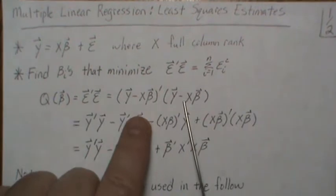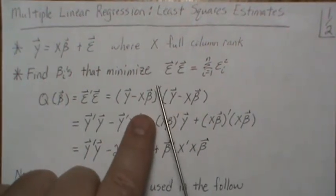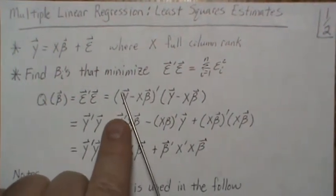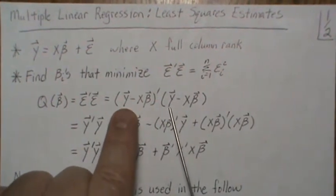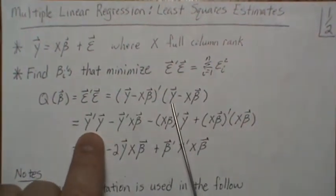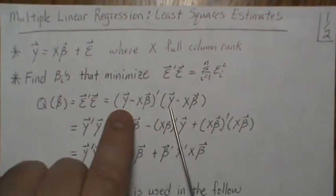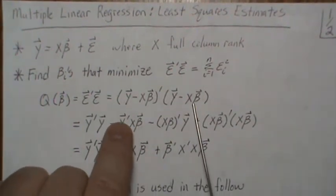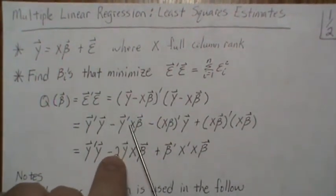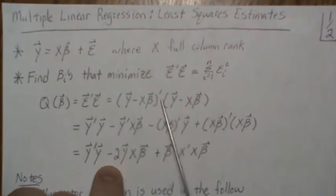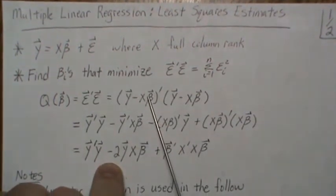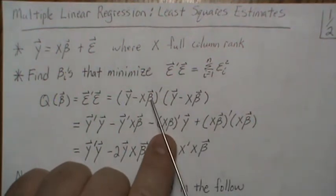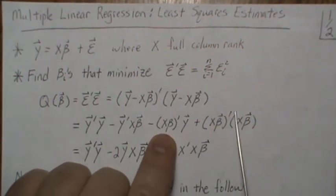Now let's do this multiplication. This transpose goes into this and then into this. We multiply the Y's together and get this term. That Y and this X give us this term — notice the transpose. Then that times Y gives us this, and then that times this, which is this.